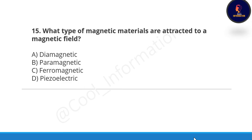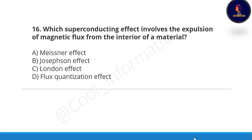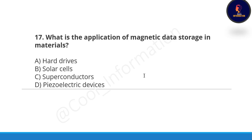Next question: what types of magnetic material are attracted to a magnetic field — diamagnetic, paramagnetic, ferromagnetic, or piezoelectric? Correct option is B, paramagnetic materials are attracted to a magnetic field. Next question: which superconducting effect involves the expulsion of magnetic flux from the interior of a material — the Meissner effect, the Josephson effect, or the London effect? Correct option is A, the Meissner effect. Next question: what is the application of magnetic data storage in a material — hard drives, solar cells, superconductors, or piezoelectric devices? Correct option is A, hard drives.